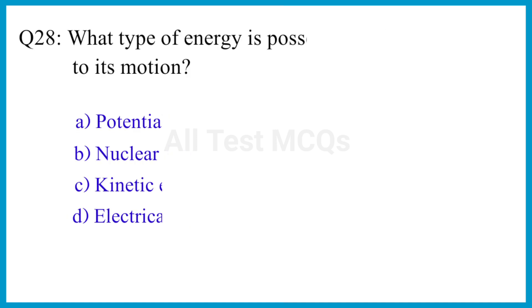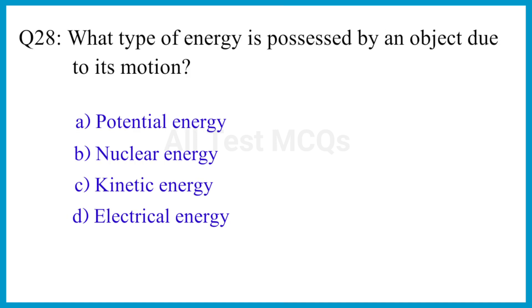Question number 28. What type of energy is possessed by an object due to its motion? The correct answer is option C. Kinetic energy.